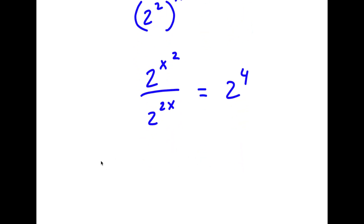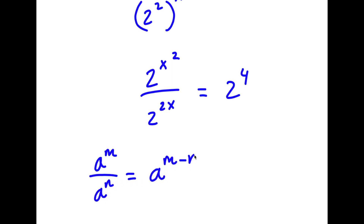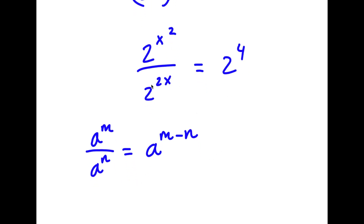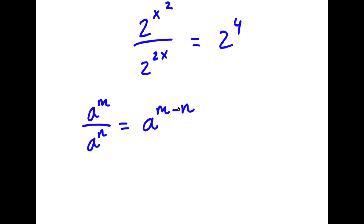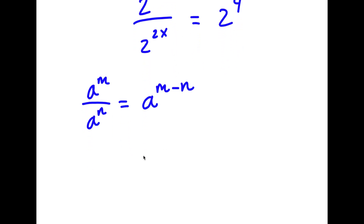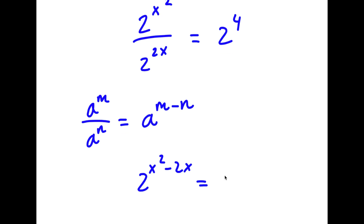If I have something in the form a to the power of m over a to the power of n, this equals a to the power of m minus n. So 2 to the power of x squared over 2 to the power of 2x equals 2 to the power of x squared minus 2x, which is equal to 2 to the power of 4.